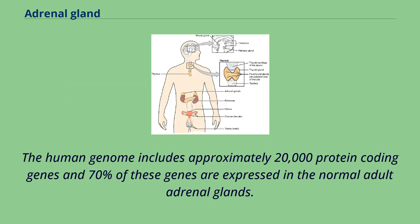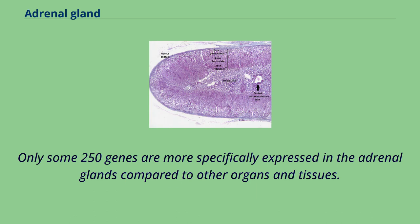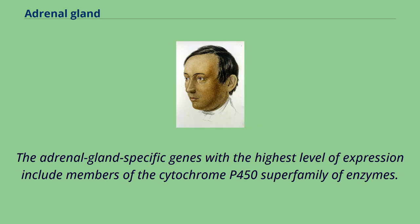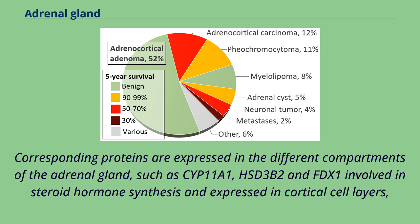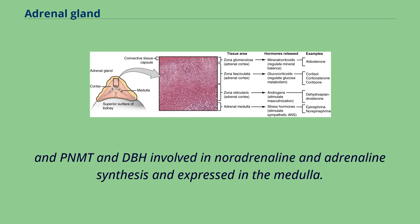The human genome includes approximately 20,000 protein-coding genes, and 70% of these genes are expressed in the normal adult adrenal glands. Only some 250 genes are more specifically expressed in the adrenal glands compared to other organs and tissues. The adrenal gland-specific genes with the highest level of expression include members of the cytochrome P450 superfamily of enzymes. Corresponding proteins are expressed in different compartments of the adrenal gland, such as CYP11A1, HSD3B2, and FDX1, involved in steroid hormone synthesis and expressed in cortical cell layers, and PNMT and DBH involved in noradrenaline and adrenaline synthesis and expressed in the medulla.